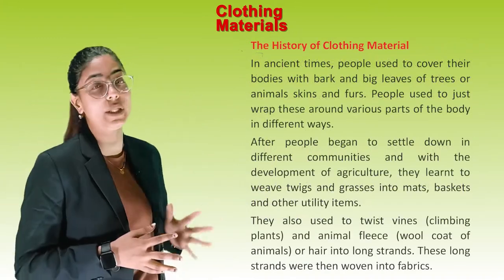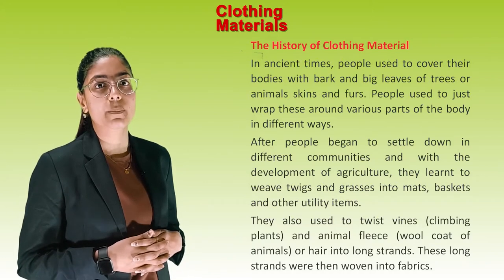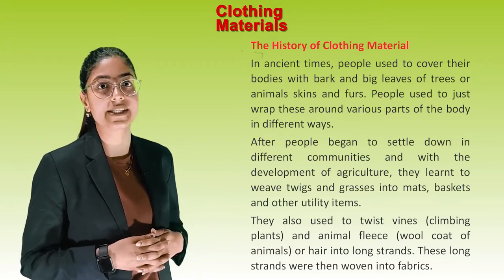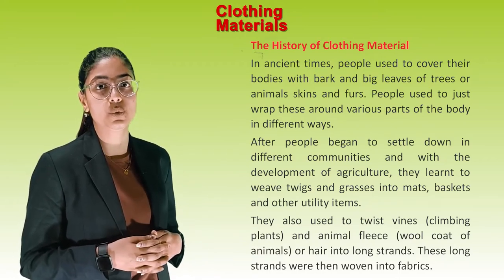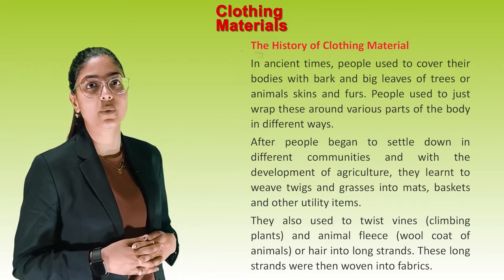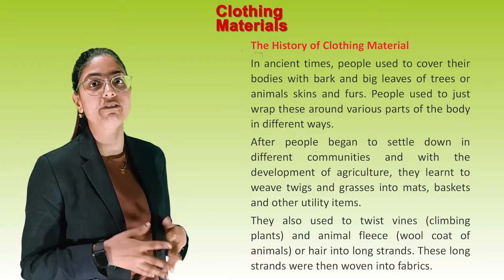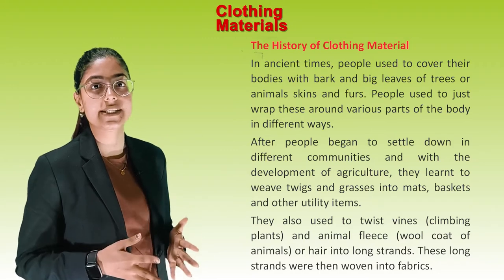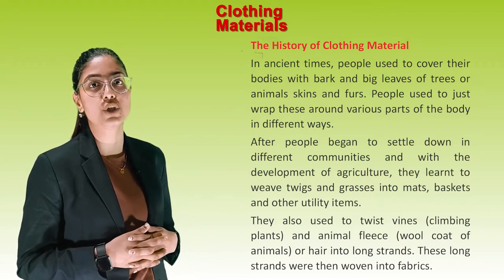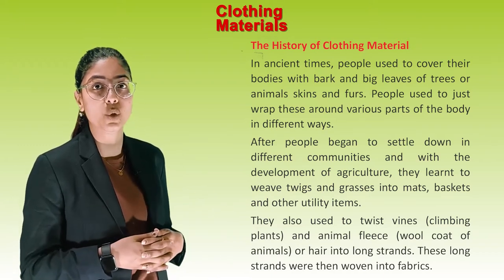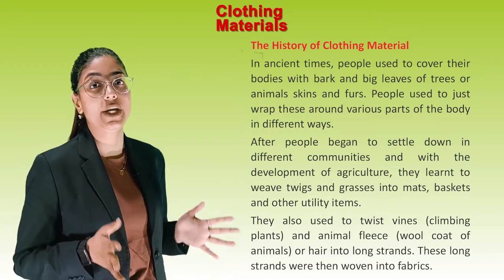The History of Clothing Materials: In ancient times, people used to cover their bodies with bark and big leaves of trees, or animal skins and furs. They used to wrap these around various parts of the body in different ways. After people began to settle in communities and with the development of agriculture, they learned to weave twigs and grasses into mats, baskets and other utility items. They also used to twist vines, climbing plants, and animals' fleece or wool into long strands.